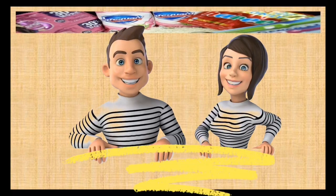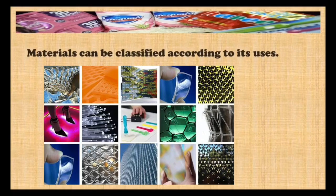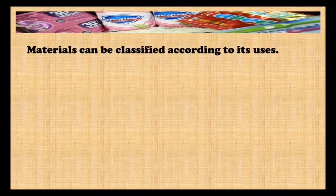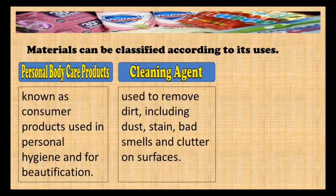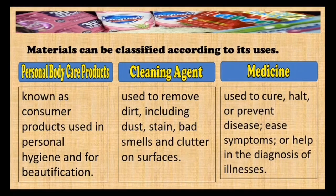You are a fast learner! Remember, materials can be classified according to its uses. It can be personal body care products, a cleaning agent, or medicine. Personal body care products are known as consumer products, used in personal hygiene and for beautification. Cleaning agents, or hard surface cleaners, are substances used to remove dirt, including dust, stains, bad smells, and clutter on surfaces. Lastly, medicines are chemicals or compounds used to cure, help, or prevent diseases, ease symptoms, or help in the diagnosis of illnesses. Advances in medicines have enabled doctors to cure many diseases and save lives.